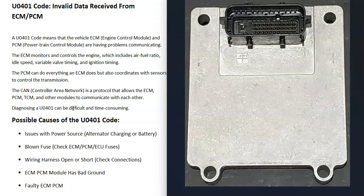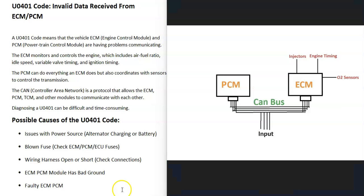There could be different things on what these computer modules are controlling, depending on the vehicle, year, make, and model. But basically when you get a U0401 code, there's a communication problem between the engine control module and the powertrain control module. The basics of how all these computer modules are talking to each other is going to go along with what they call a CAN bus, or controller area network bus.